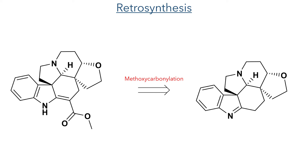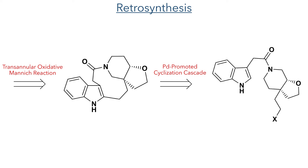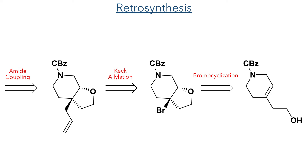So let's start with the retrosynthesis. The first disconnection removes the ester group, corresponding to a methoxycarbonylation reaction, leading back to a hexacyclic fragment. This could be formed using a transannular oxidative Mannich reaction, forming a carbon-carbon bond across a nine-membered macrocycle. The macrocycle could be formed using a palladium-promoted cyclisation cascade of the indole moiety with an alkyl halide. The indole fragment could be attached using an amide coupling, and the allyl group could be installed using a Keck radical allylation of a brominated bicyclic compound. Both the bromide and the five-membered ring could be installed in one step using a bromocyclisation from the piperidine precursor, which is the starting material for the entire synthesis.